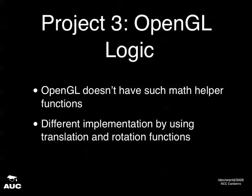OpenGL logic: it doesn't have as many maths helper functions as DirectX. I've changed the camera class using different implementations — the three vectors are set up, and by translating these three vectors back to the origin you're able to perform rotations around it. This avoids the issue of rotating around the origin from a distant position, which would incorrectly update your position vector along with your look vector.